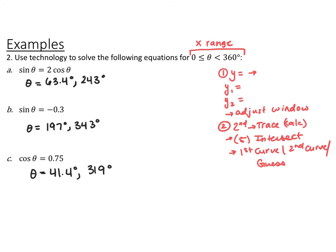So just using my graphing calculator, I found that the two places where sine of theta and 2 cosine of theta intersect are 63.4 degrees and 243 degrees. The two places that sine of theta is equal to negative 0.3 would be at 197 degrees and 343 degrees. And then the two places that cosine is equal to 0.75 would be 41.4 degrees and 319 degrees.